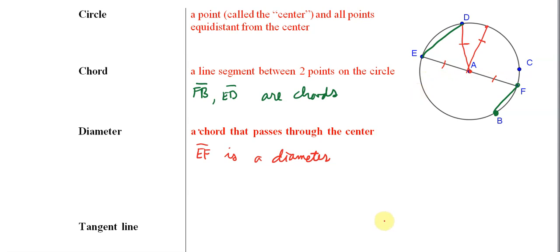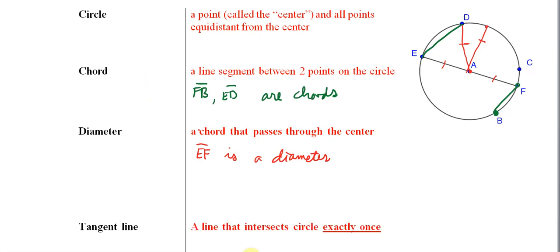Next, we have what's called a tangent line. I want to emphasize that the word tangent does not mean the same thing as it does in trigonometry — it is not opposite over adjacent. The tangent line here is a line that touches the circle exactly once. This is a little hard to imagine, so let's draw an example.